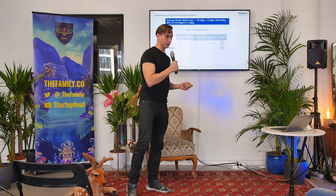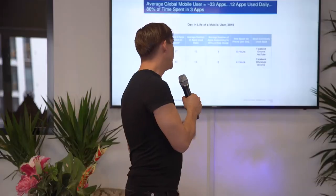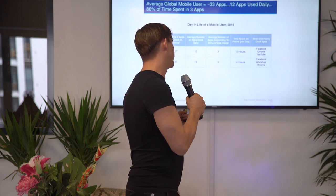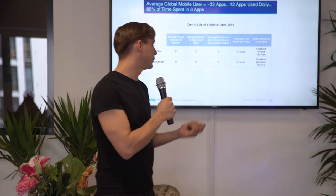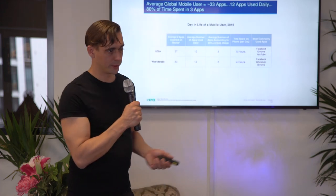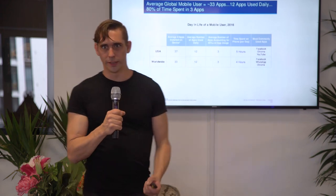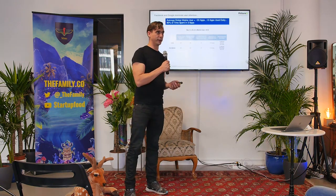To really hammer home the point about competing with Google and Facebook: 80% of app usage is in three apps. In the USA that's Facebook, Chrome, and YouTube. Worldwide it's Facebook, WhatsApp, and Chrome — Facebook owns two of those worldwide, Google owns two of them in the US. So if you're building a mobile product, whether you like it or not you're going up against Google and Facebook, which is a pretty terrifying prospect.